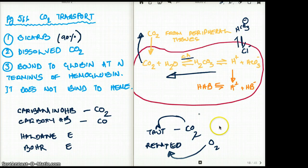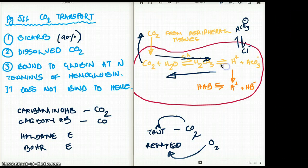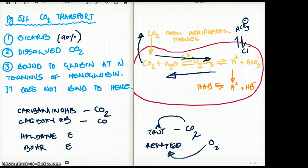The opposite happens in the tissues. When there is too much carbon dioxide in the tissues, carbon dioxide enters and the equation moves to the right. We have more bicarb formation and more taut form. This shift going in that direction is called the Bohr effect.